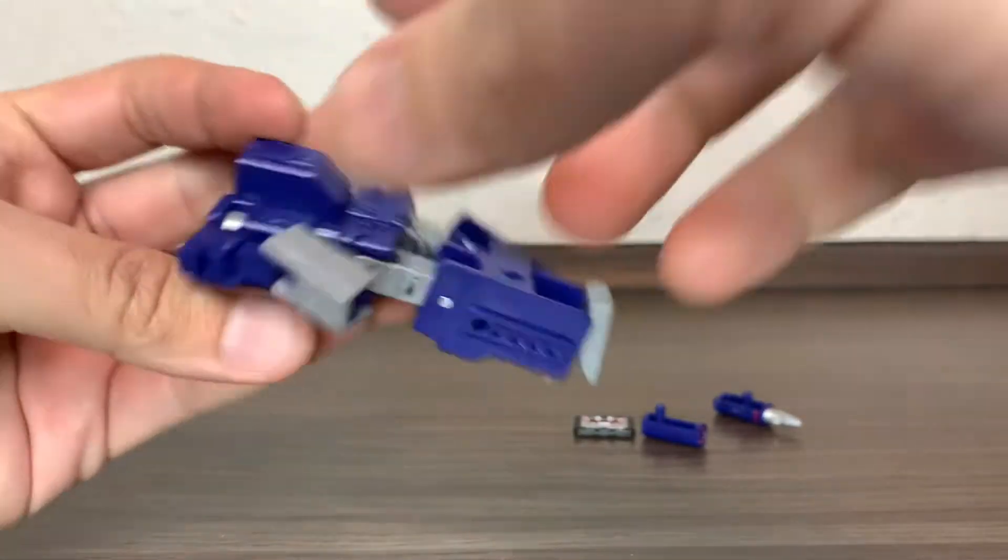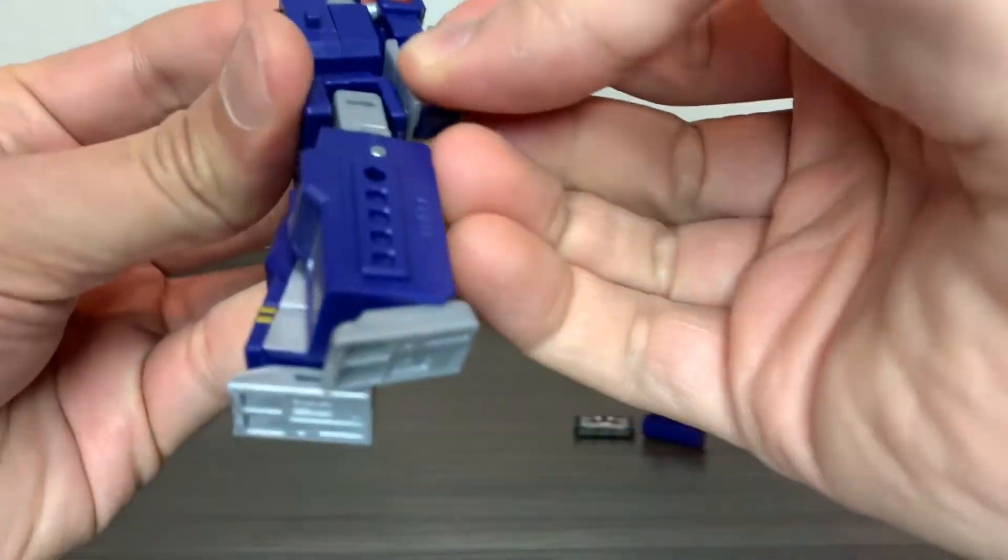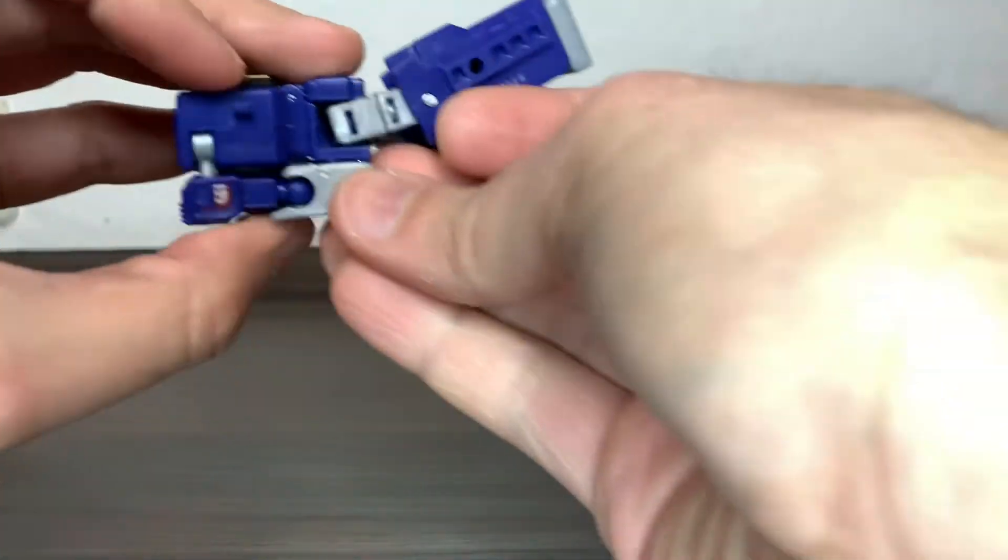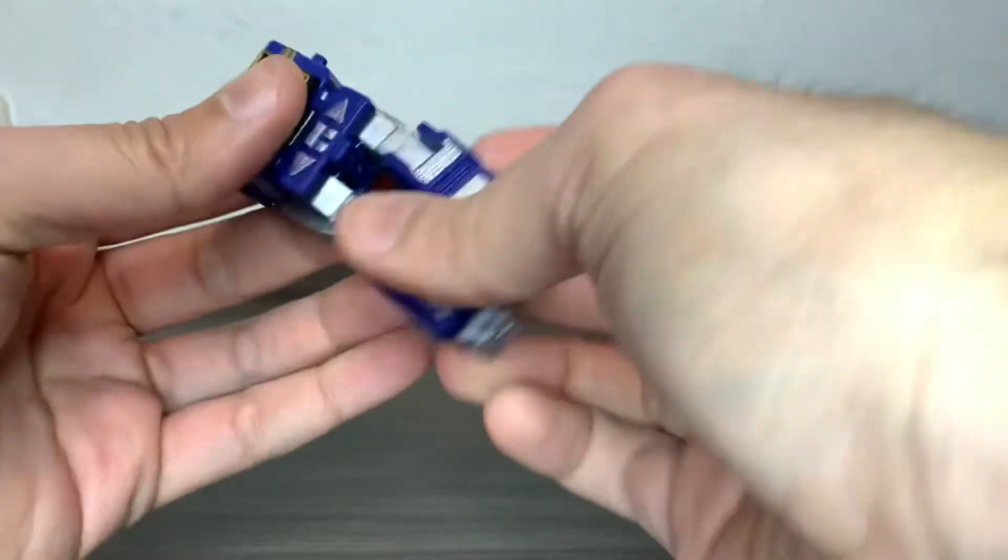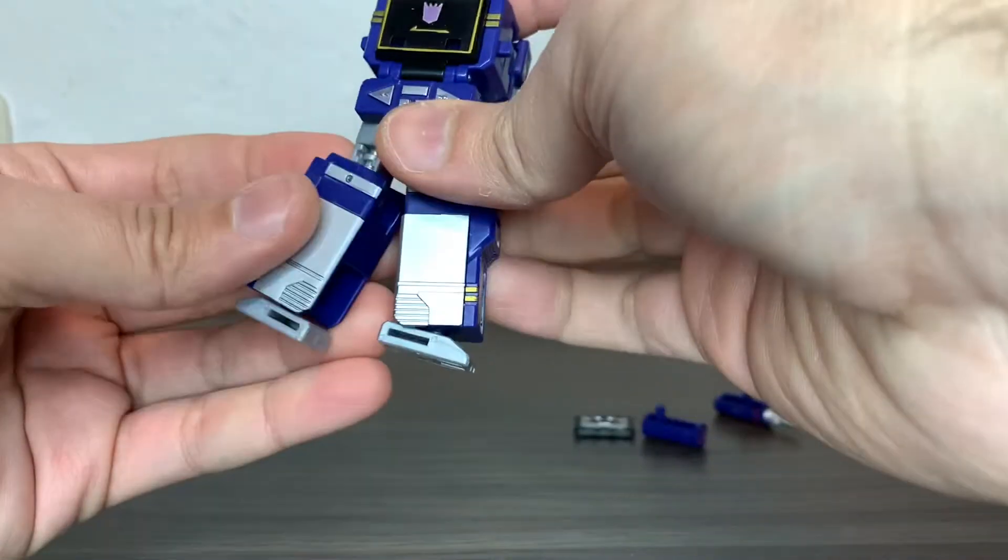You turn that around, turn the forearm, same for the other side, and you tab them there as you can see.